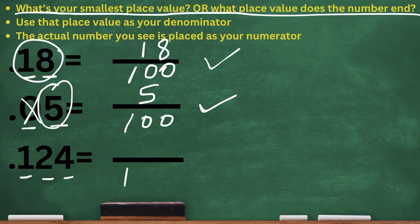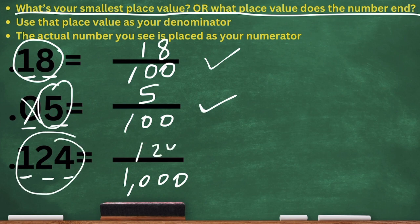Now my last number is 0.124, or 124 thousandths, because that four ends in the thousandths place. So then I take the actual number, put it at the top as my numerator, and there you have it.